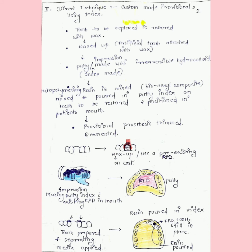If the patient has a pre-existing denture or RPD, we can either wax it up as we discussed already or use a pre-existing RPD on the cast. We take an impression and make a putty with the pre-existing RPD in mouth. You see this yellow colored is the putty, and the RPD is still in place.